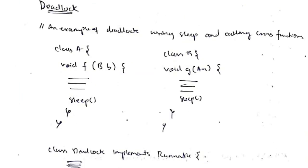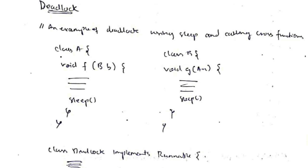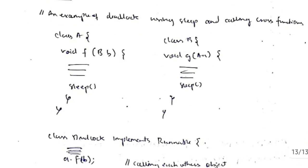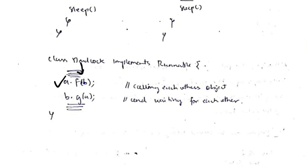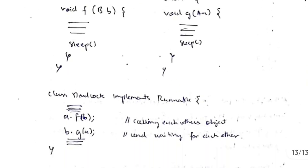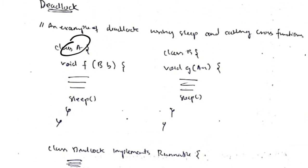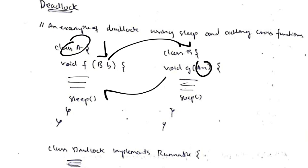Deadlock means two functions are waiting for each other's execution, so neither gets executed. For example, class A uses an object of class B, and class B uses an object of class A. A sleep function is added to illustrate this. When a.f(b) is called in the main function, A's object is created first, but creating B's object requires A's object first — so both wait for each other and the program gets stuck in a deadlock.